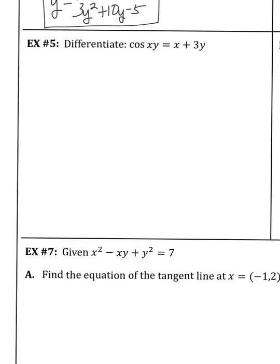Example 5 involves a trig value. You may want to review derivatives of sine, cosine, and tangent. Here we have cos(xy) — the angle measure is xy, so think of it in parentheses. Finding the derivative requires the chain rule: the derivative of the outside, cosine, is negative sine; then multiply by the derivative of the inside, xy, which requires the product rule.